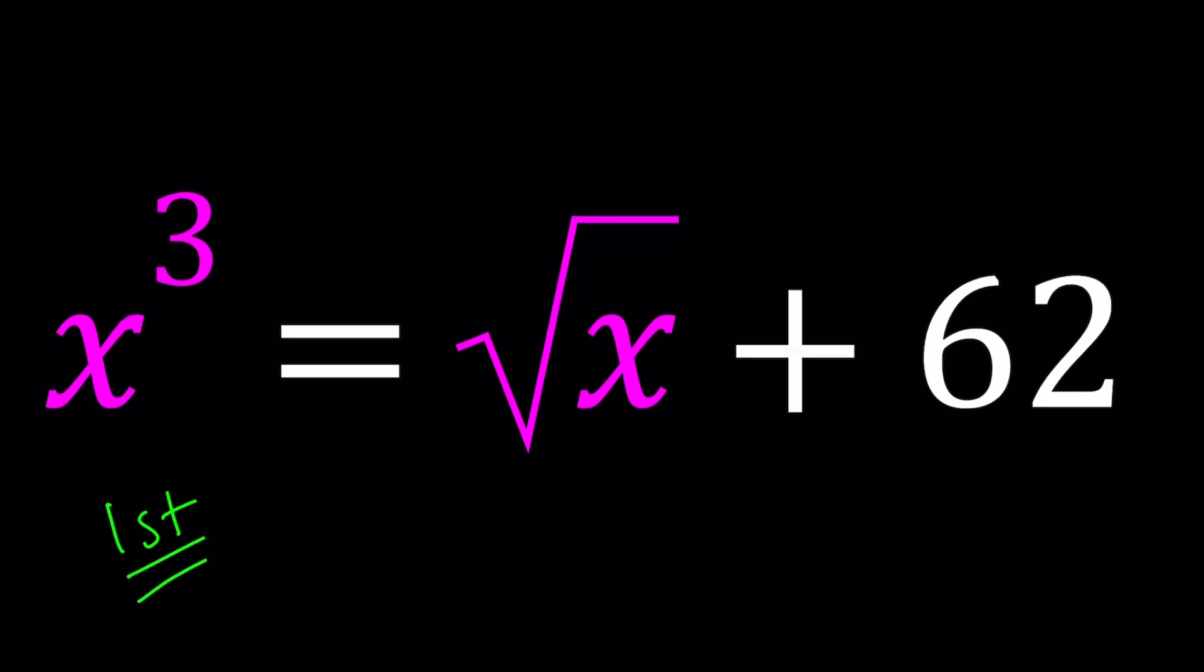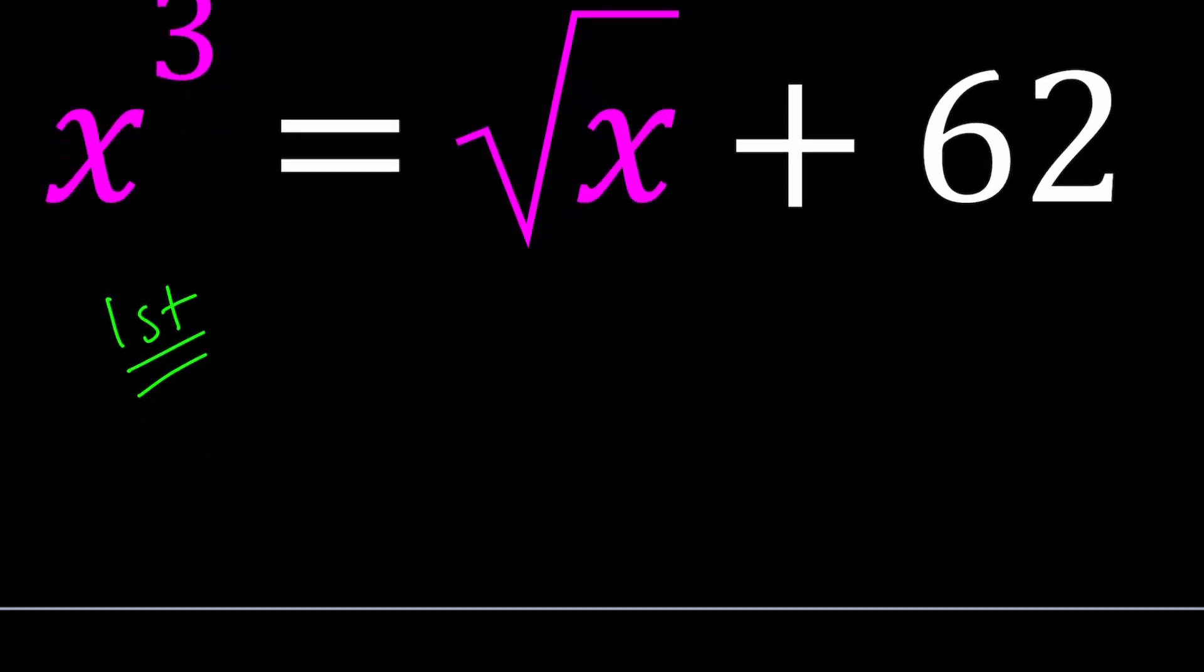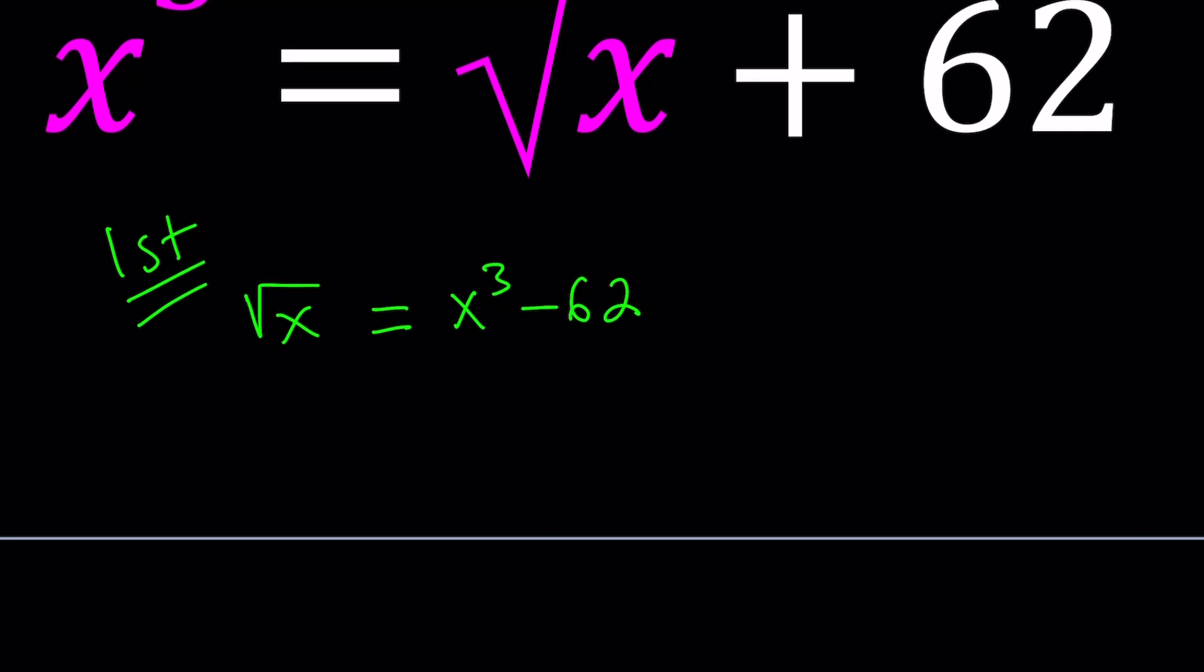So first method, I have x cubed equals a radical plus 62. Let's go ahead and isolate the radical because you want to square both sides and get rid of the radicals, so that we can turn this into a polynomial. The next step would be squaring both sides. When you square this it's going to become x to the 6th power minus 2ab is going to give you 124x cubed plus